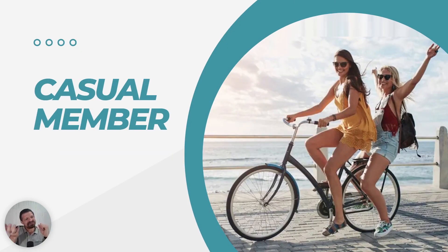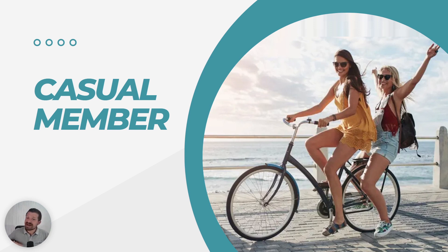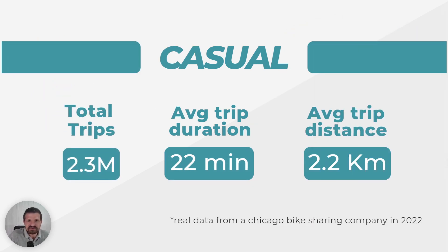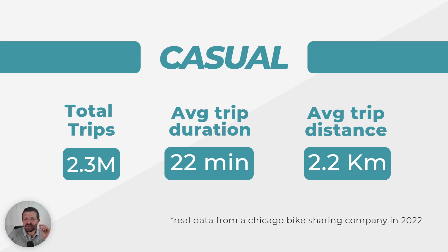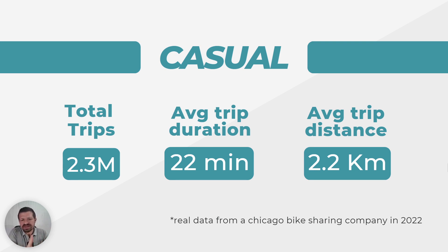On the other hand, casual riders are those who may rent our bikes for a short period of time, either for leisure or utility. They are less frequent, but no less valuable customers. Our data analysis reveals that casual riders have made a total of 2.3 million trips — less than annual members — with an average duration of 22 minutes per ride, almost double that of annual members, and an average distance of 2.2 kilometers per trip.